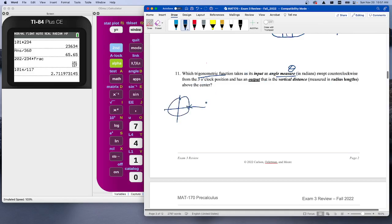That's starting here. It has an output of the vertical distance, either up or down, which is measured by the y-coordinate. Remember, the y-coordinate equals r sine theta.